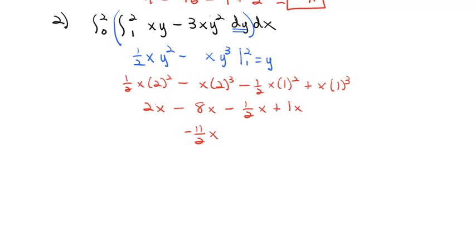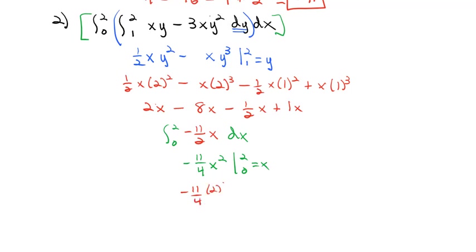Now that we've finished the dy part, we take the last integral dx from 0 to 2, integrating (−11/2)x. That gives x² times negative 11 over 4, integrated from 0 to 2, equal to x. Plugging 2 in: negative 11/4 times 2². Plugging 0 in gives 0. So 2²=4, divided by 4, times negative 11 — we get the exact same solution, negative 11, integrating in the opposite order.